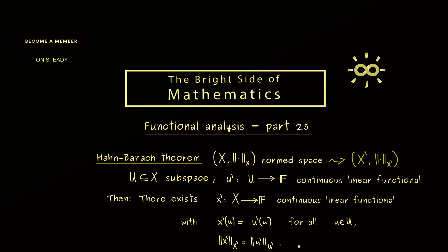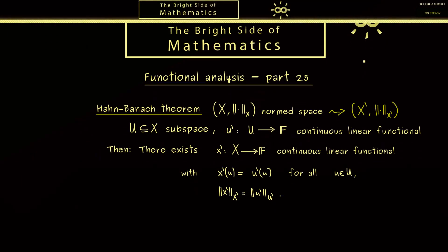There we have it. This version of Hahn-Banach, often called the extension version, just tells us that we always find an extension with the same norm. So you see the theorem is easy to remember and that's what you really should do.